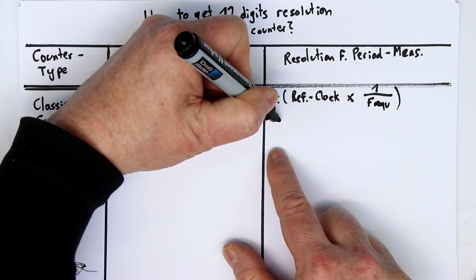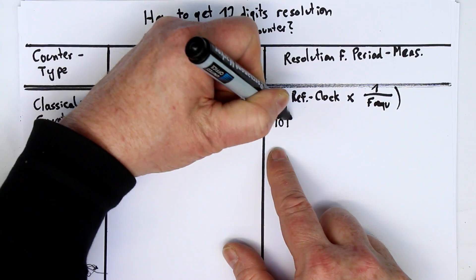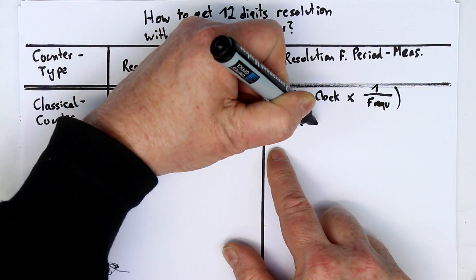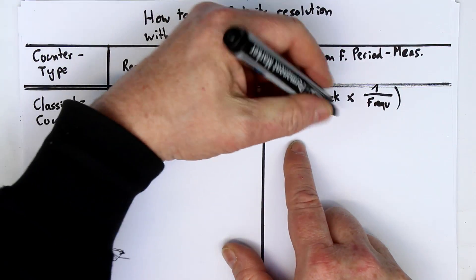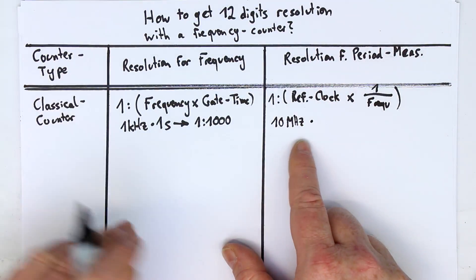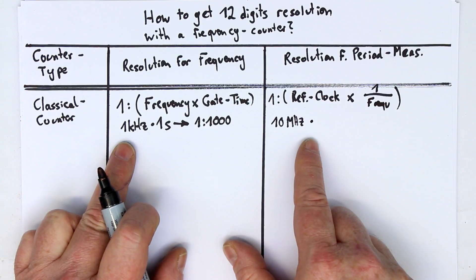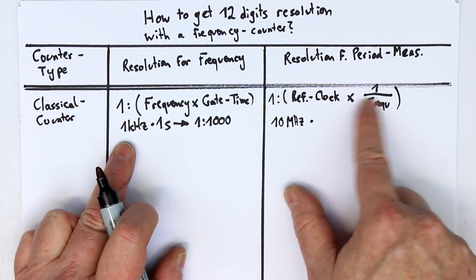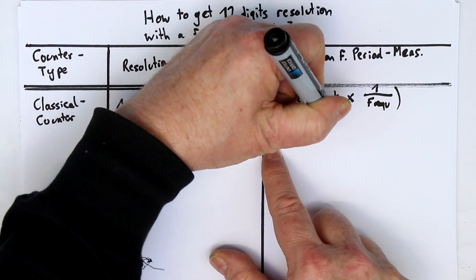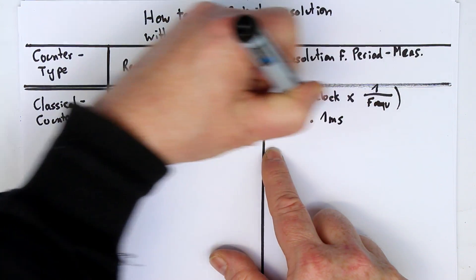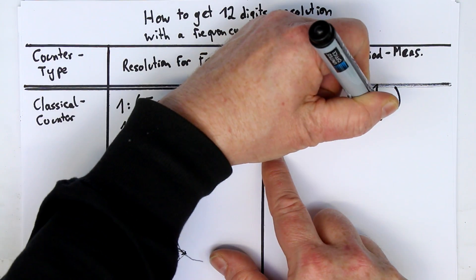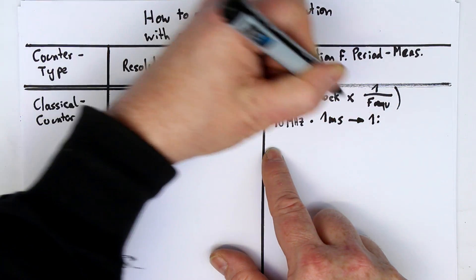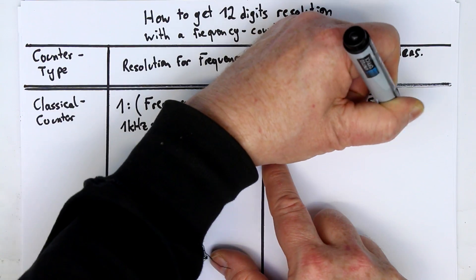Our reference clock is usually 10 megahertz, and if we stay at our 1 kilohertz example, we have a period time of 1 millisecond, which is 1 over the frequency. And this gives us 1 in 10,000.